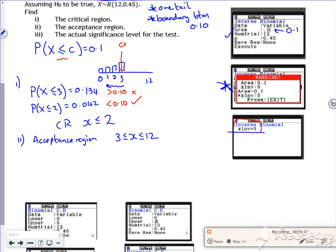Now then it says the actual significance level. So this is this part here, because this is what I'm using for it. So the actual significance level is 0.042, which is 4.2%.